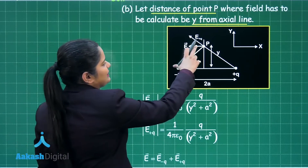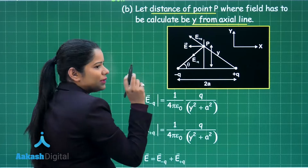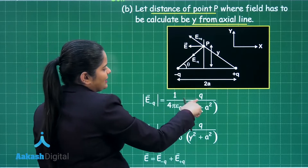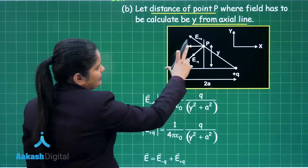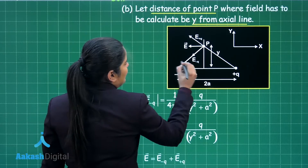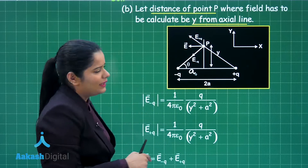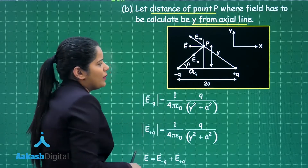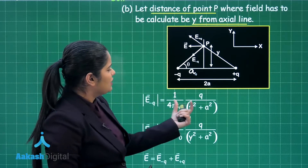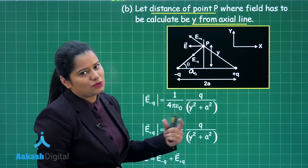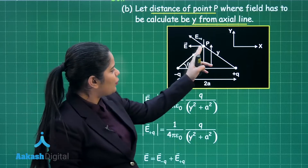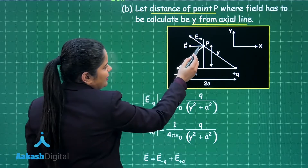Here k is 1/(4πε₀), the magnitude of the charge is q, and the distance r is the square root of a² + y², since the half-separation is a and the perpendicular distance is y. Therefore r² = a² + y². This gives us the electric field E at point P due to the negative charge, which is directed towards the negative charge.